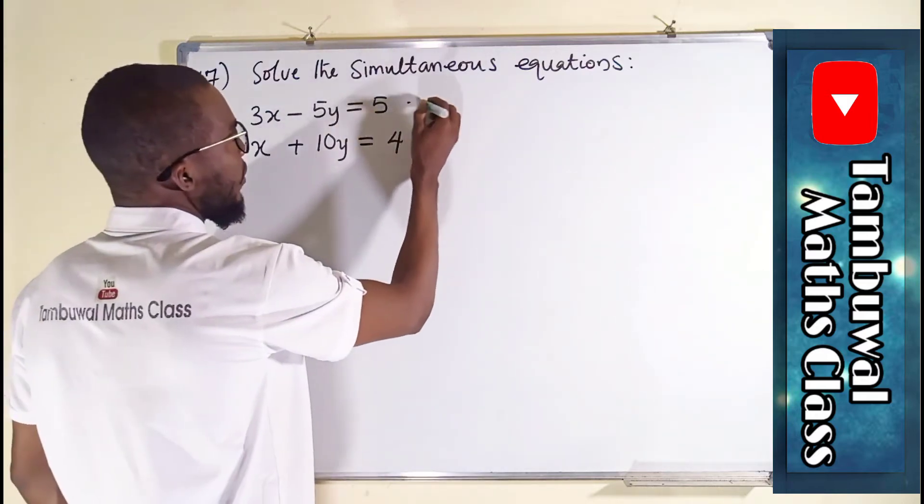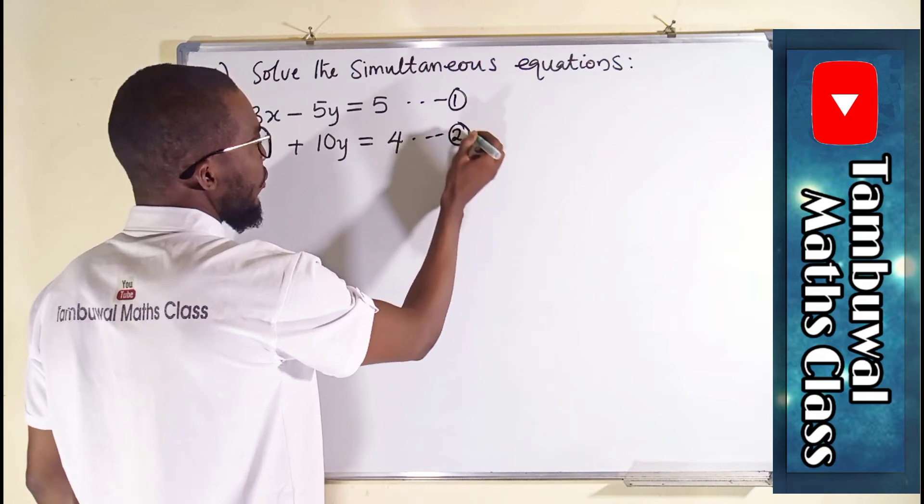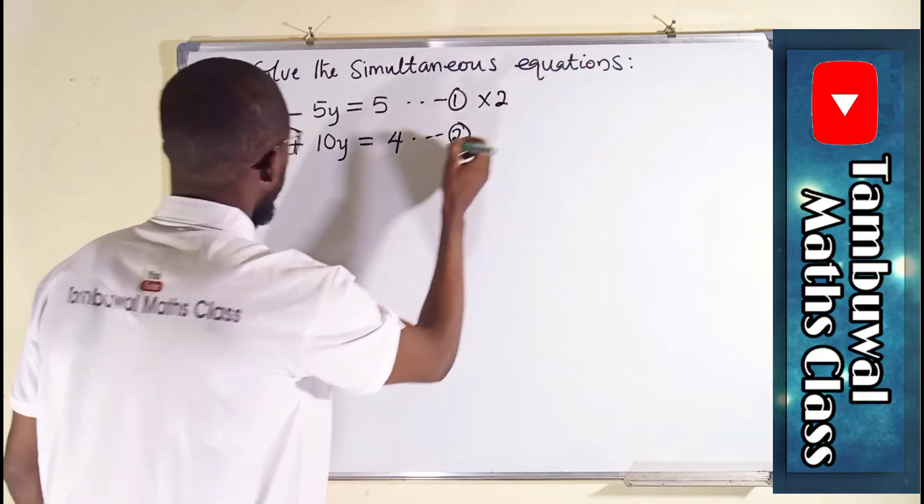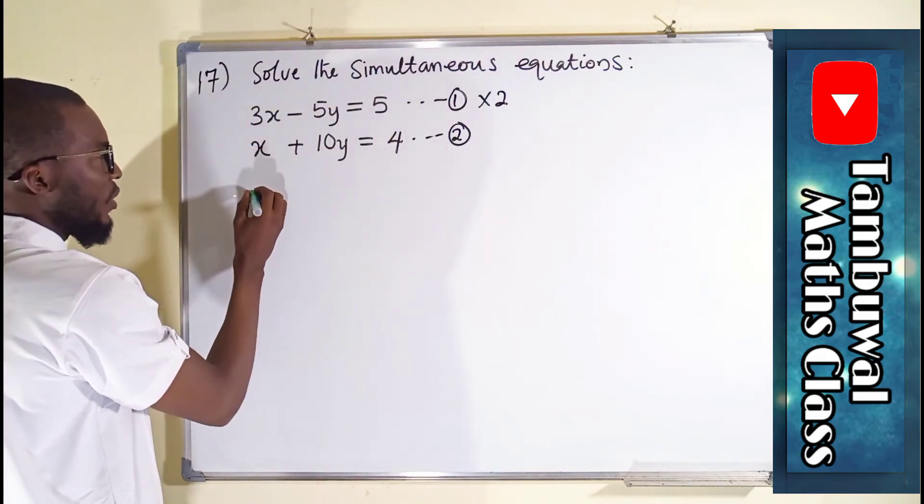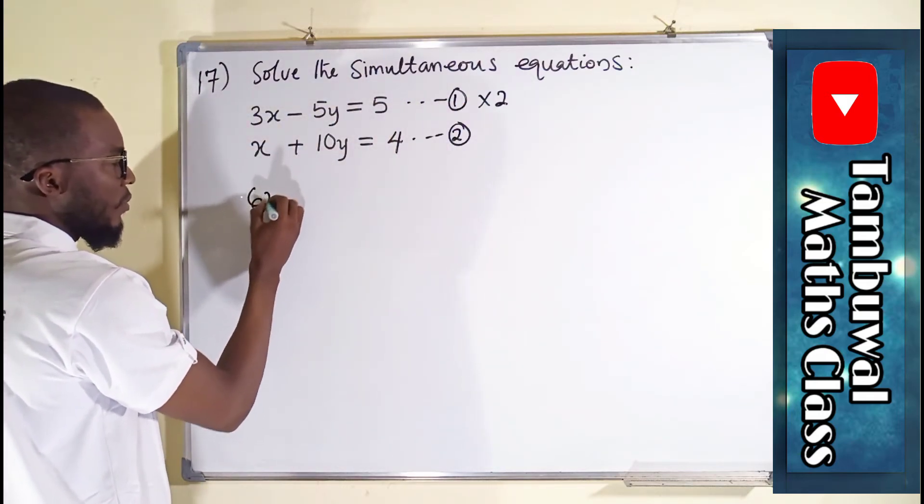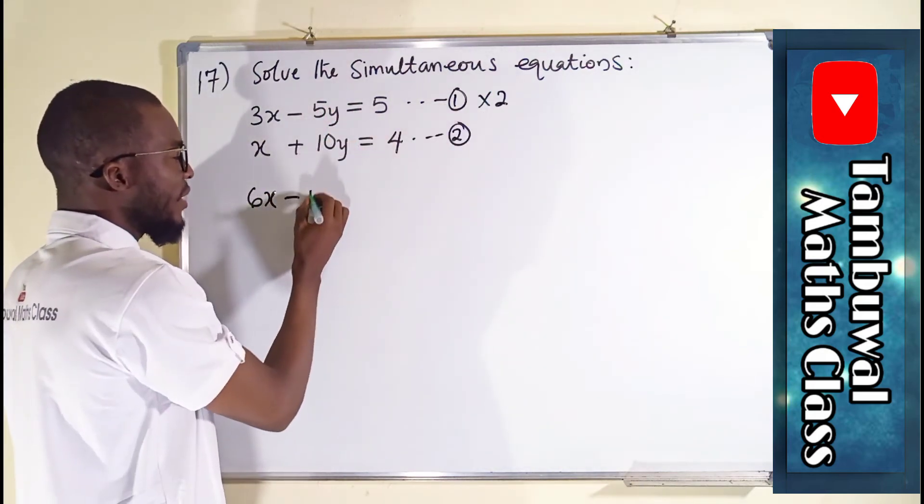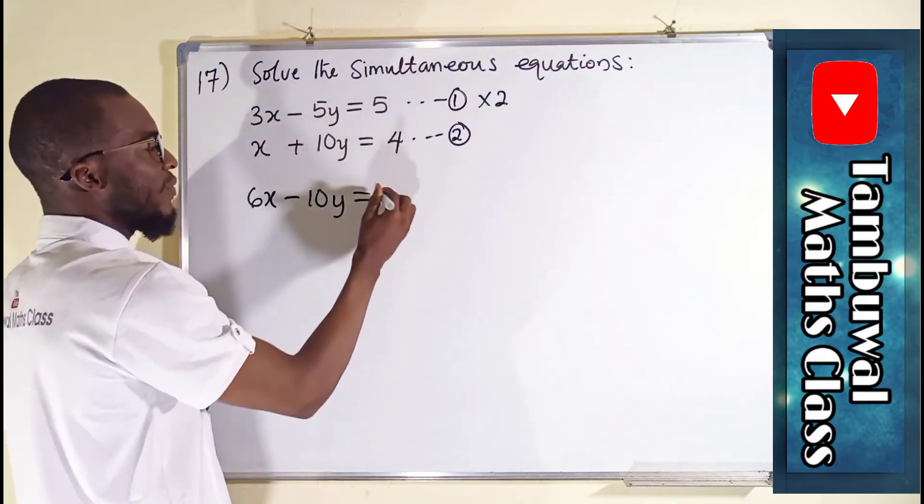So this is our first equation, while this is our second equation. So we can multiply equation 1 by 2. So 3 times 2 is equal to 6x. 2 times negative 5 is negative 10y, and 2 times 5 is 10.